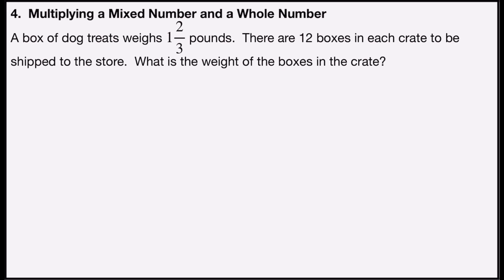Problem number four is multiplying a mixed number and a whole number. It says a box of dog treats weighs one and two-thirds pounds, and there are twelve boxes in each crate to be shipped to the store. What is the weight of the boxes in the crate? I have twelve boxes each weighing one and two-thirds pounds, so I need one and two-thirds pounds twelve times.